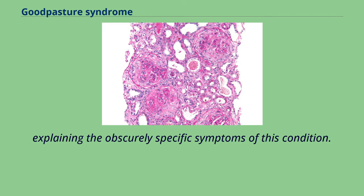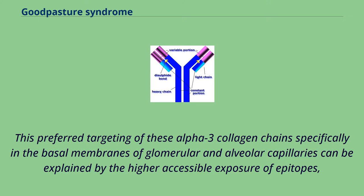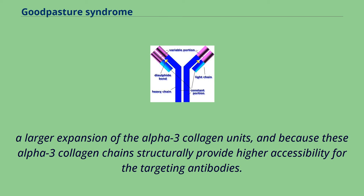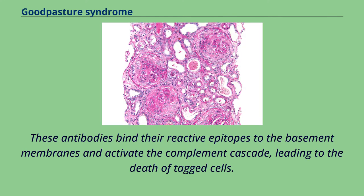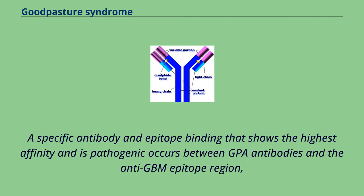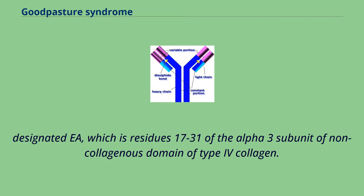This explains the obscurely specific symptoms of this condition. The preferred targeting of alpha-3 collagen chains specifically in the basal membranes of glomerular and alveolar capillaries can be explained by the higher accessible exposure of epitopes, a larger expansion of the alpha-3 collagen units, and because these alpha-3 collagen chains structurally provide higher accessibility for the targeting antibodies. These antibodies bind their reactive epitopes to the basement membranes and activate the complement cascade, leading to the death of tagged cells. A specific antibody and epitope binding showing the highest affinity and pathogenicity occurs between GPA antibodies and the anti-GBM epitope region designated EA, which is residue 17-31 of the alpha-3 subunit of the non-collagenous domain of type 4 collagen.